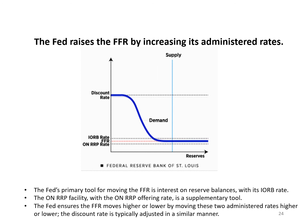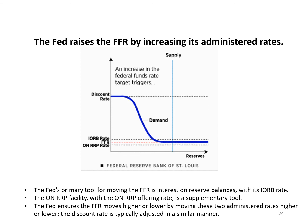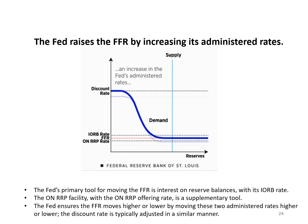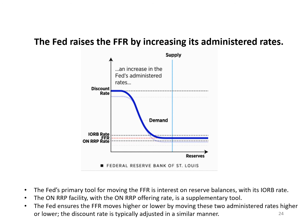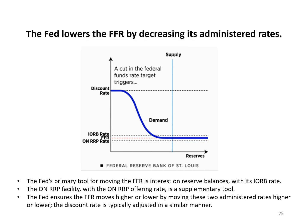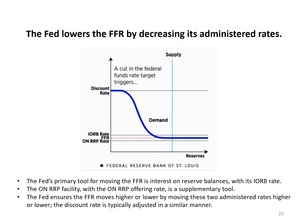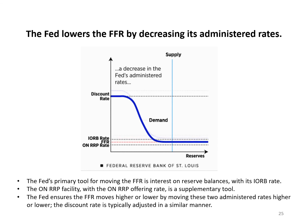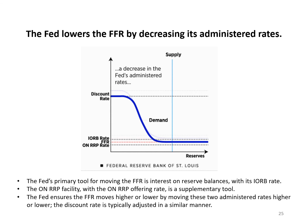Here you see the Fed raising the federal funds rate by increasing its administered rates — interest on reserve balances, the overnight reverse repurchase agreement rate, and the discount rate — all at the same time, steering the federal funds rate higher. Likewise, the Fed lowers the federal funds rate by decreasing its administered rates, steering the federal funds rate lower. Notice that in both cases the supply curve isn't changing at all. In the old limited-reserves regime, the Fed moved the federal funds rate by shifting the supply curve. In the ample reserves regime, the Fed moves the federal funds rate by shifting its administered rates.